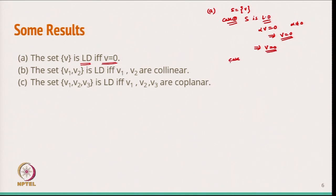For case 2: if V = 0, then for any alpha, alpha*V = alpha*0 = 0, which is always true regardless of alpha. So we can say the set {V} is linearly dependent. Therefore, if there is just a single element in the set and it is linearly dependent, the only possibility is V = 0.